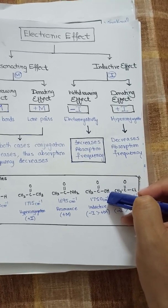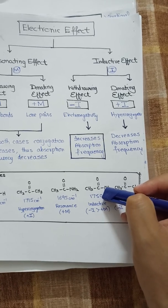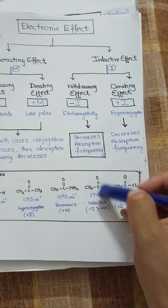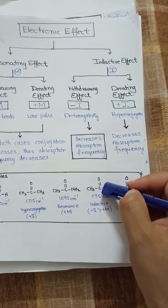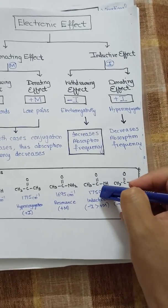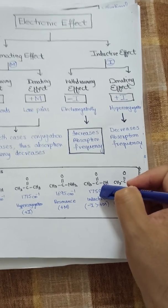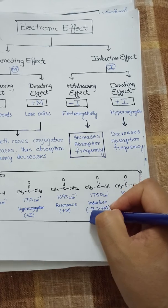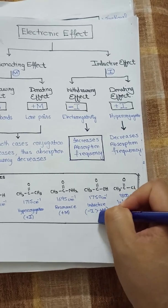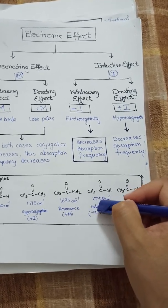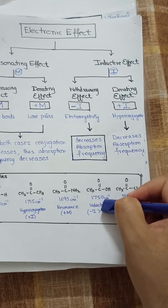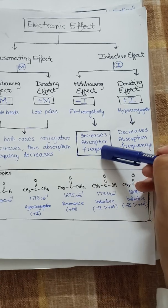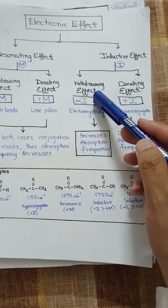In the case of the hydroxyl group, we have acetic acid. Here, oxygen has lone pairs and produces an electron donating resonating effect (+M). However, the inductive effect due to the electronegativity of oxygen is greater than the resonating effect. Therefore, -I dominates the +M effect, and in this case the absorption frequency increases rather than decreases.